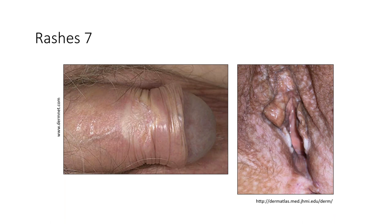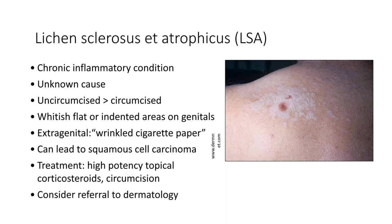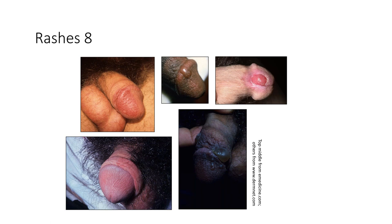Whitish firm areas on the shaft of the penis or in the vulva area — this is lichen sclerosus et atrophicus (LSA), another chronic inflammatory condition of unknown cause. More commonly seen in uncircumcised people; causes whitish flat or dented areas on the genitals and can occur extra-genitally with a wrinkled cigarette-paper appearance. Chronic inflammation can lead to squamous cell carcinoma if untreated. Treated with very high-potency topical steroids; circumcision can be curative in men. Consider referral to dermatology, urology, or OB-GYN.